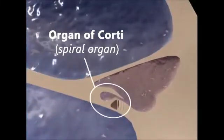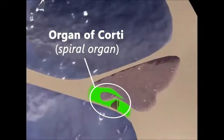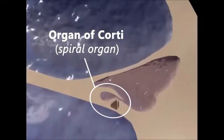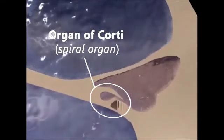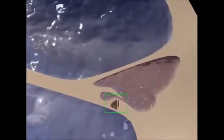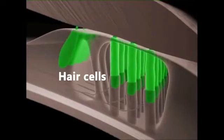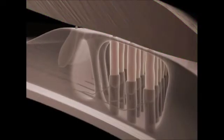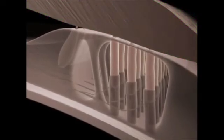A specialized structure called the organ of Corti is situated on the basilar membrane. As the basilar membrane vibrates, the organ of Corti is stimulated, which sends nerve impulses to the brain via the cochlear nerve. The actual nerve impulses are generated by specialized cells within the organ of Corti called hair cells. The hair cells are closely covered by a structure called the tectorial membrane. As the basilar membrane vibrates, the tiny clusters of hairs are bent against the tectorial membrane, triggering the hair cells to fire.